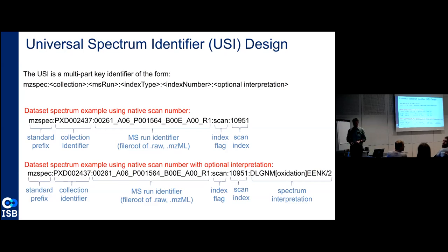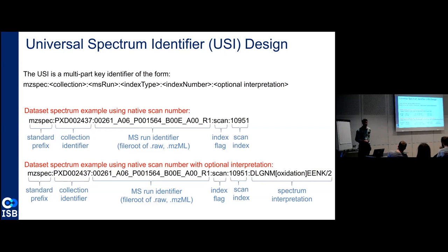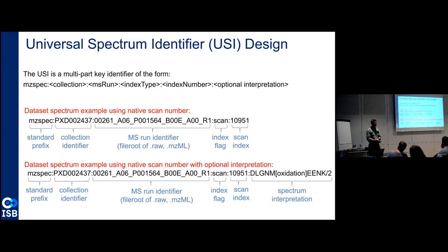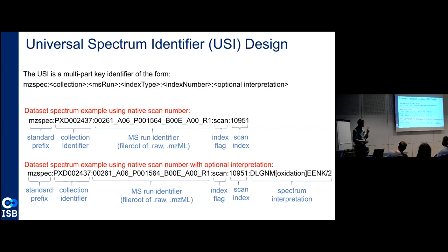A question came up: how do you distinguish whether you're referring to the raw file or the MZML, if you have the same file name? In the official specification, you're actually allowed to put a dot extension — dot MZML, dot raw, dot something else — to specify which file you want to refer to. For example, in the Massive repository at UCSD, if you give it this key, it will show you several different possibilities: dot raw, dot MZML, dot MZXML potentially. The second part of the answer to that question is in just two more slides.